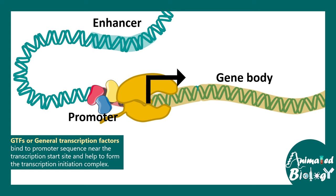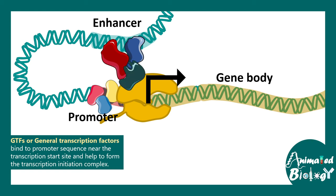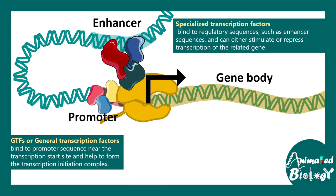In an in vitro situation, if you put these general transcription factors along with polymerase, the transcription reaction should happen. Along with that, there are other transcription factors which can bind to regulatory elements such as an enhancer and interact with other proteins such as mediators to modulate the rate of transcription — how fast and how efficient transcription would be. These are known as specialized transcription factors.